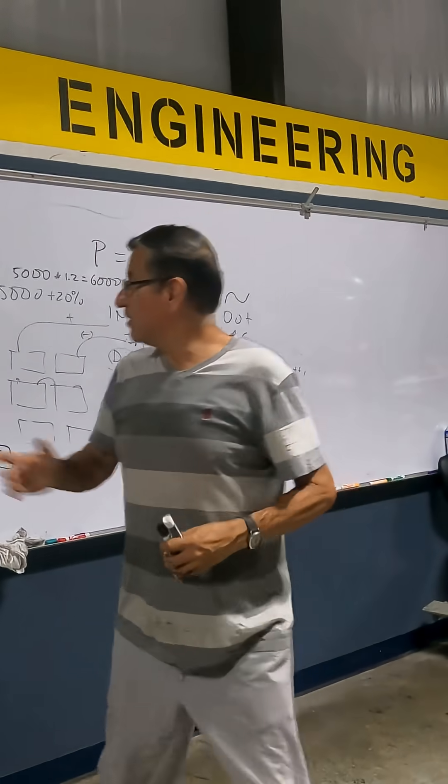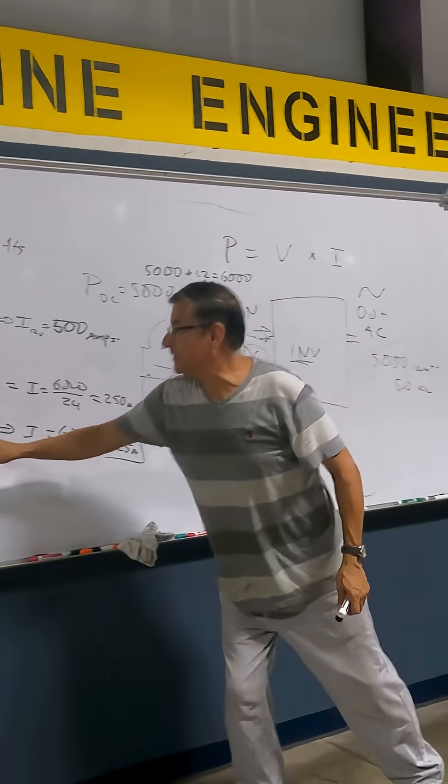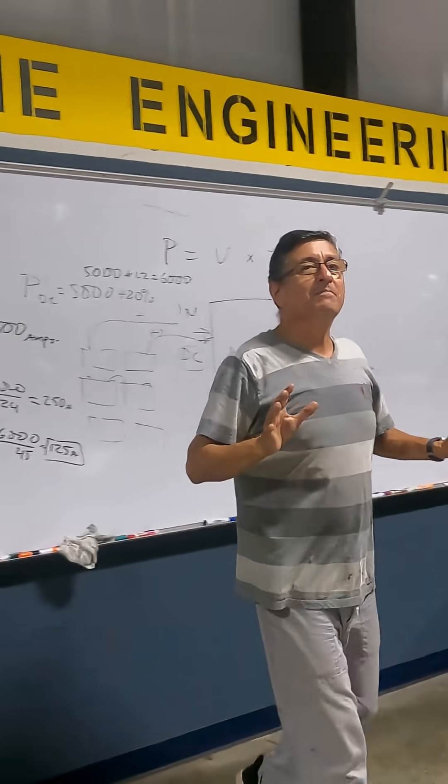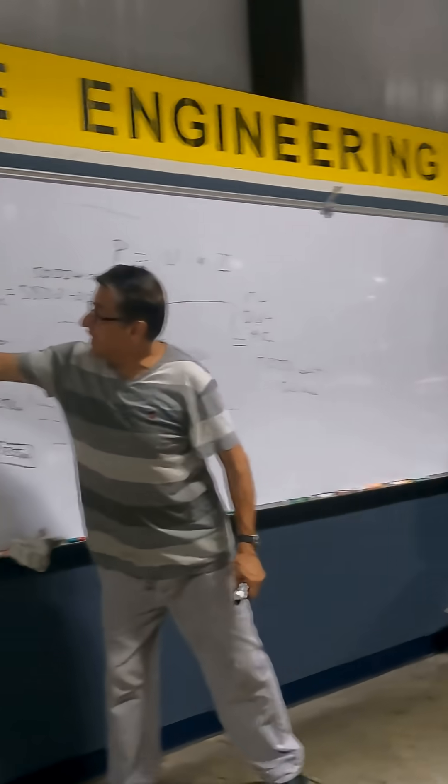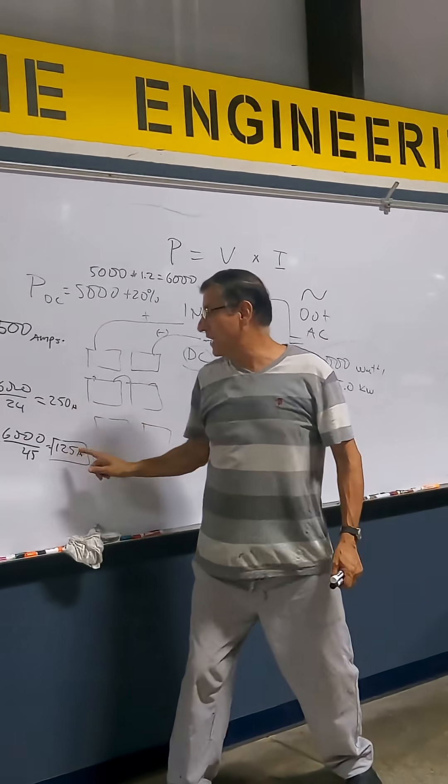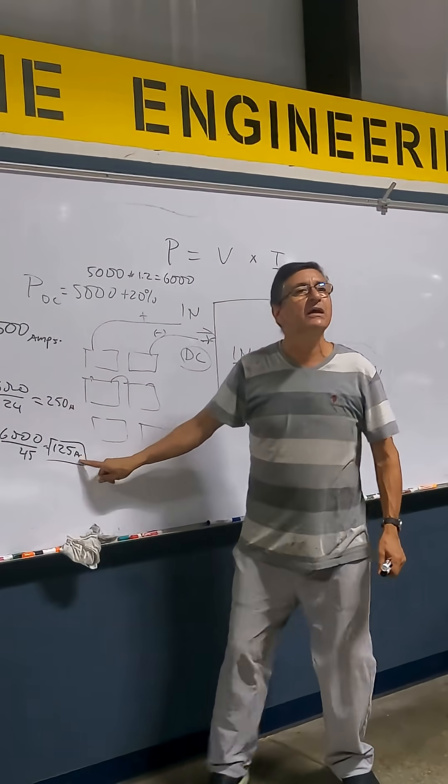Of course, at the end of the day, that voltage times the intensity produce the power that you need. But if you configure it in higher voltage, you need to collect less amps. Is clear, guys?